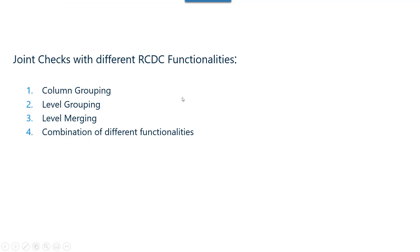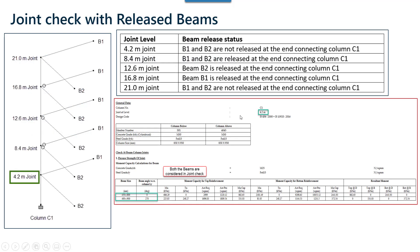In this way, joint checks are handled for different functionalities in RCDC — column grouping, level grouping, level merging, and combinations of these three functionalities. Next, we move ahead to check what happens when a joint has a released beam.